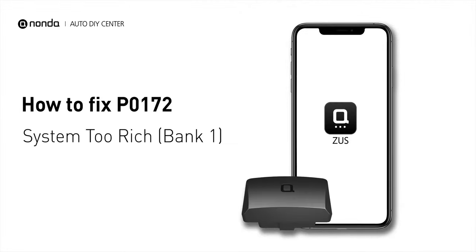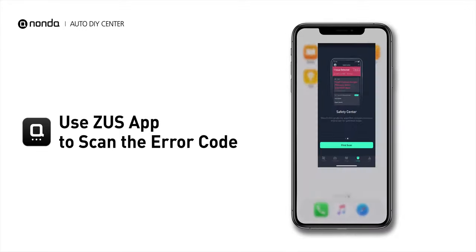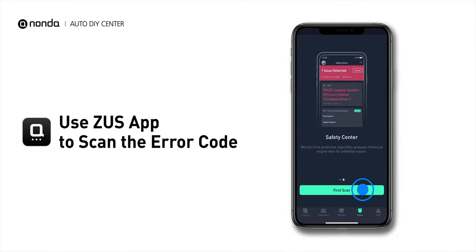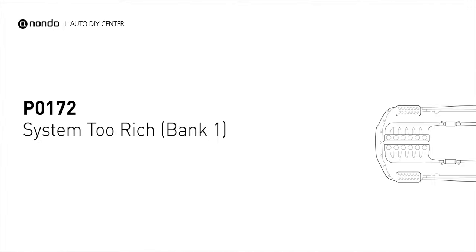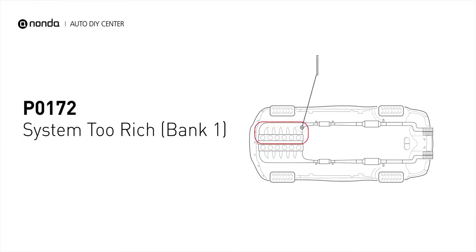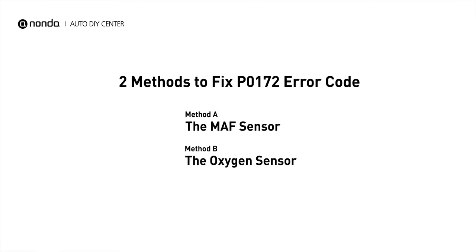If you are getting a P0172 error code, this video is going to show you two practical solutions to fix the error code at home. Use the Zeus app to scan your vehicle and see the error code P0172. P0172 means that the engine air-fuel mixture is too rich, which indicates that bank one of your car has too much fuel or not enough air. Here are two simple DIY methods you can try to solve this problem.